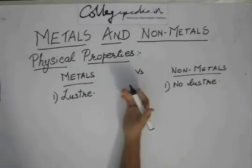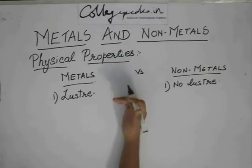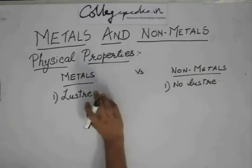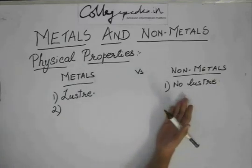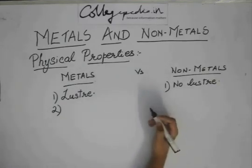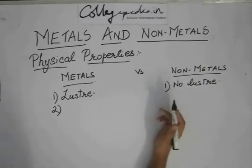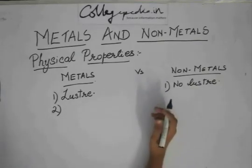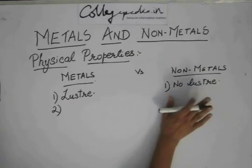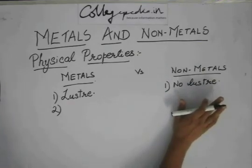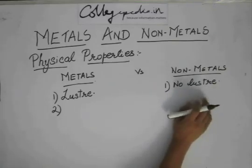If you see carbon or coal, does it shine? No. Most non-metals exist as gases at room temperature, and the ones which are solid generally do not shine. Though iodine is an exception — iodine does have luster. But carbon and other solid non-metals will have no luster.